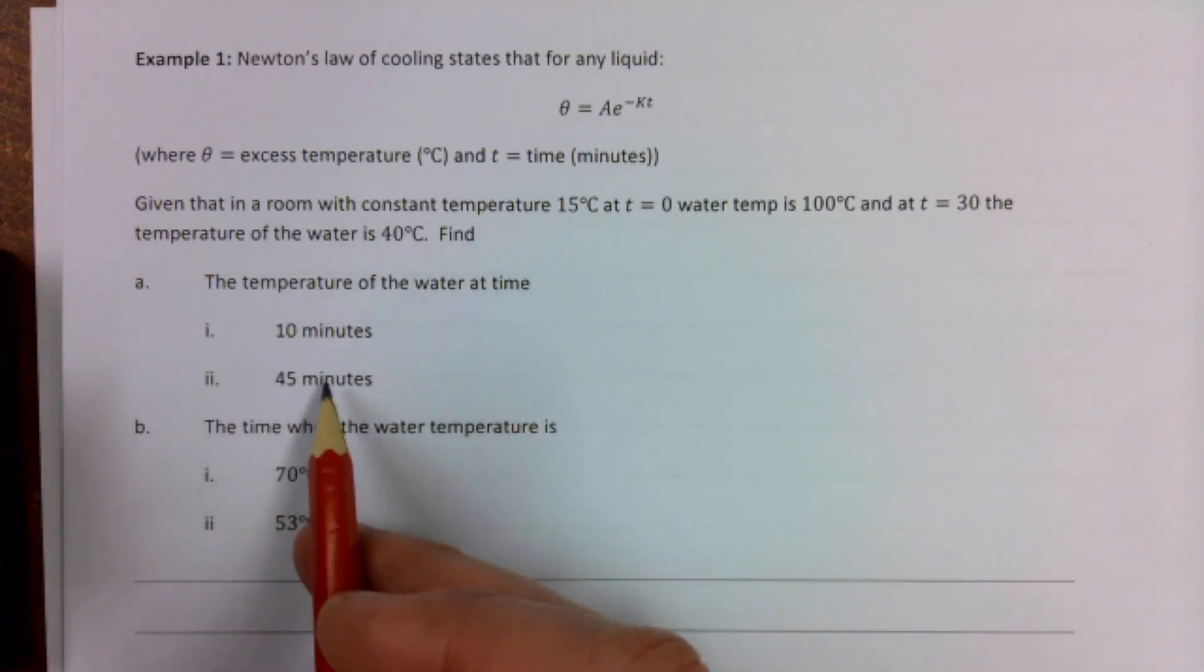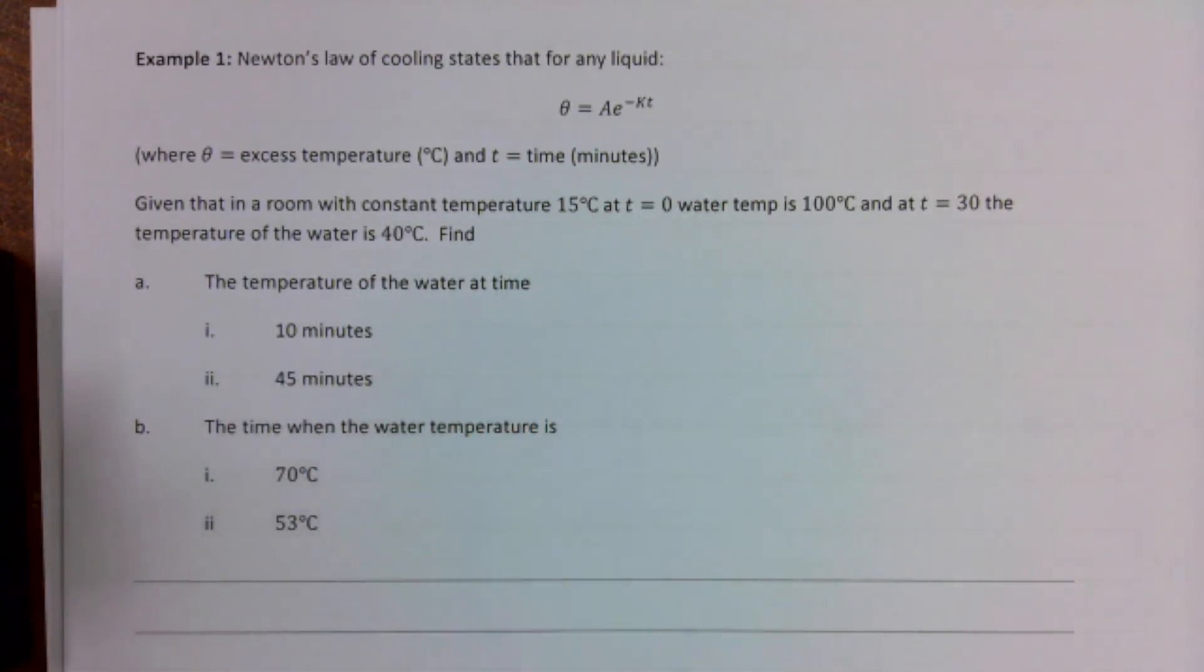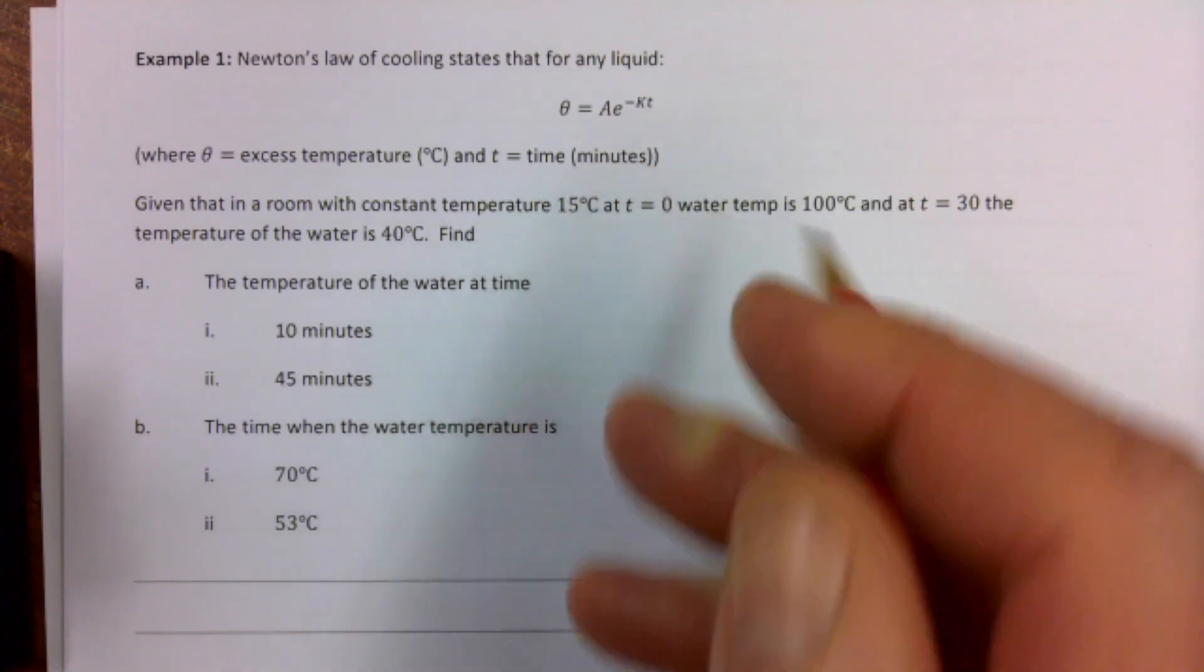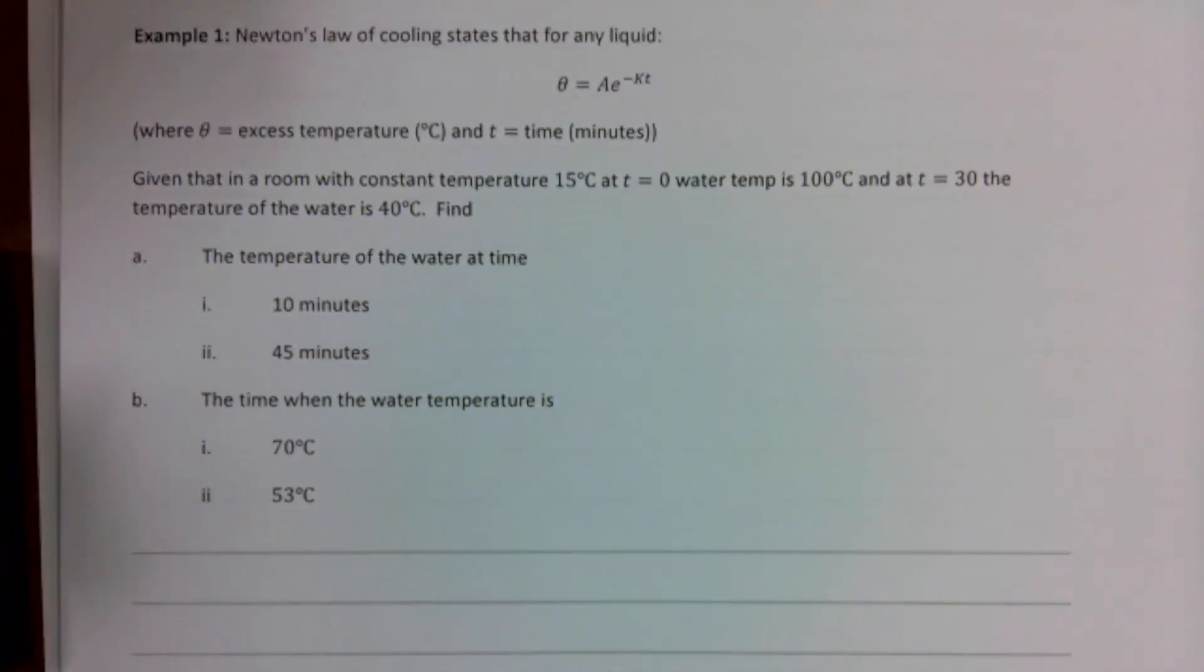Find the temperature of the water at time 10 minutes, 45 minutes. Find the time when the water temperature is at. So we have an awful lot of setup here to do to find our A and our K. Once we find that, then we'll know our equation and we can work from there.